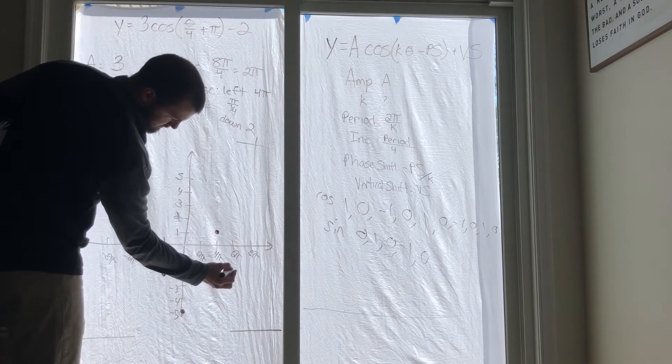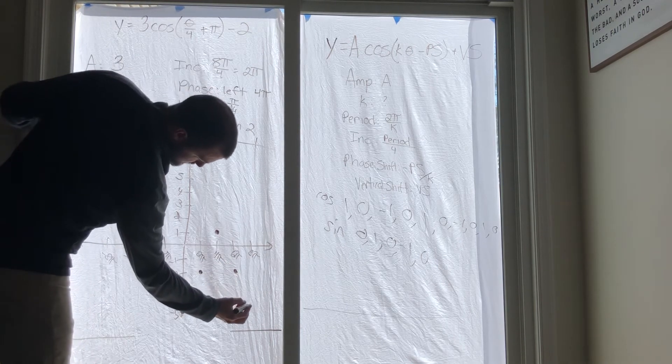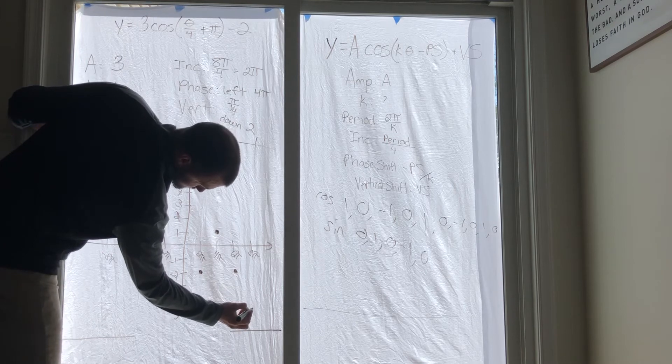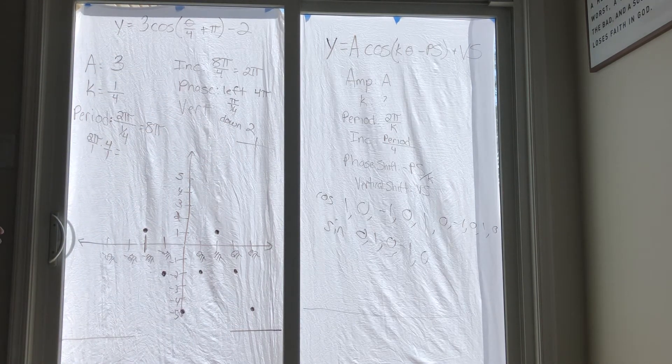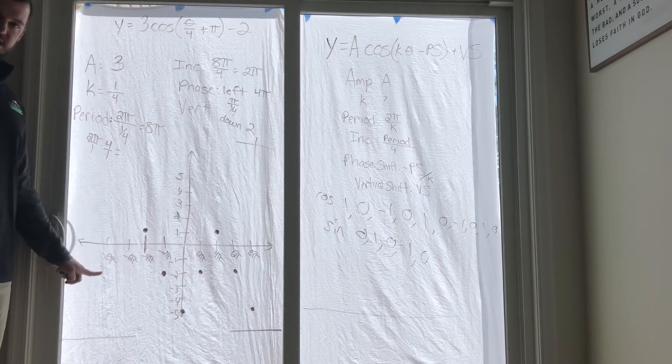And then we're going to go down to negative 5. Now we're not done yet because we didn't extend all the way to the edge out here. What you have to do is go for two periods, two whole things.